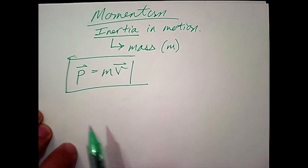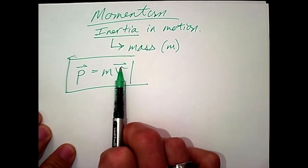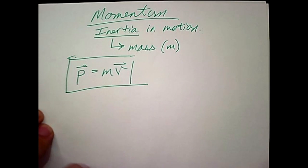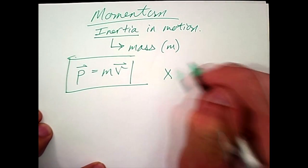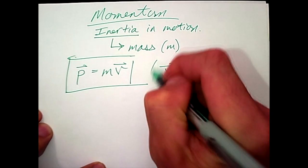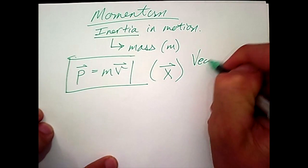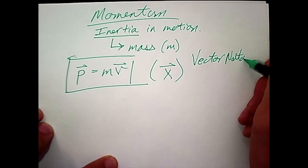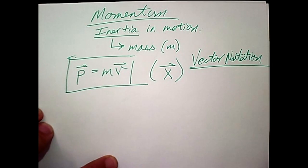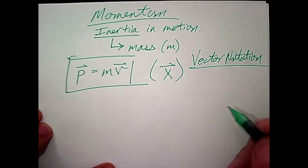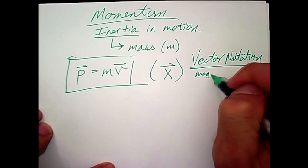Now the second thing here that's a new notation are these arrows above these variables p and v for velocity. And so I just want to go over that briefly, anything with an arrow above it is going to be described as a vector. This is vector notation.